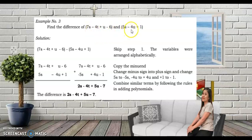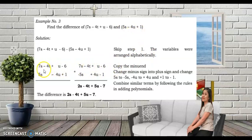As you can see, the terms are already arranged alphabetically, so all we have to do is copy the minuend. The minuend is 7s − 40... minus 6.